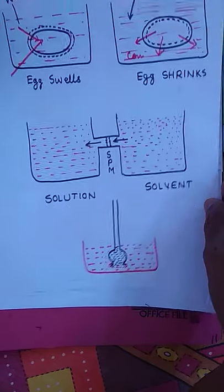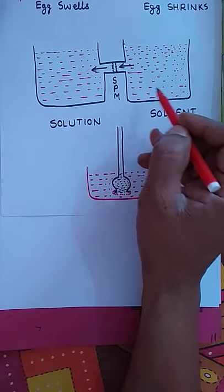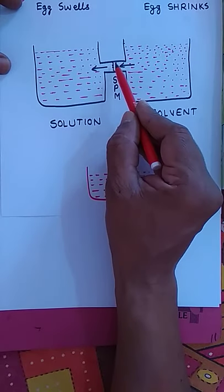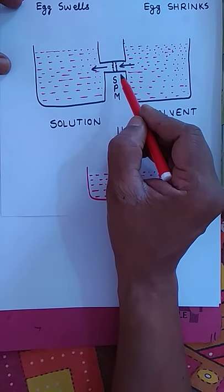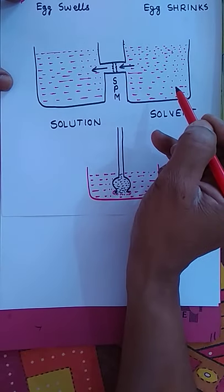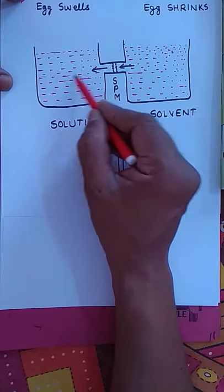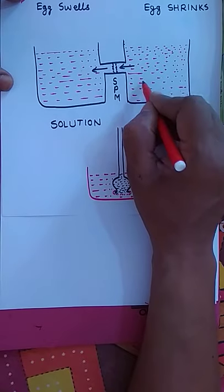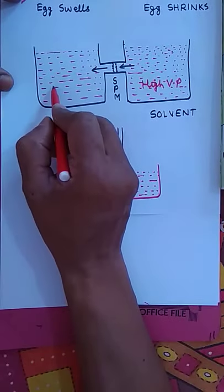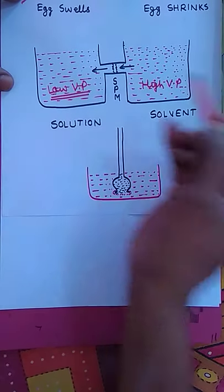Now, regarding osmotic pressure — in this container, solvent is on one side and solution on the other, separated by a semi-permeable membrane. Osmosis takes place: solvent molecules pass through the SPM into the solution. This is due to the high vapor pressure of the solvent compared to the low vapor pressure of the solution.